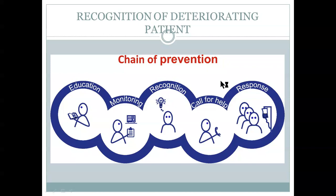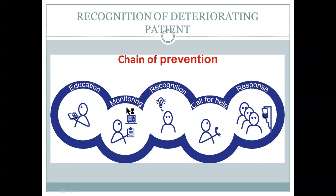Now let's talk about what doctors and nurses can do to prevent sudden cardiac death or cardiopulmonary arrest. This is called the Chain of Prevention. The chain of prevention has five rings illustrating: education, monitoring, recognition, call for help, and response.